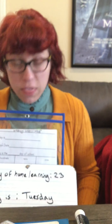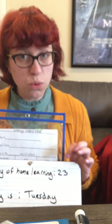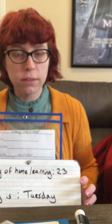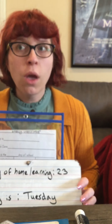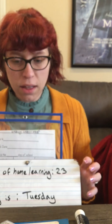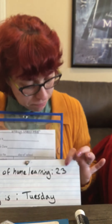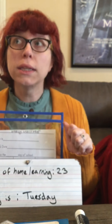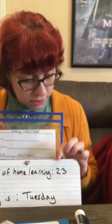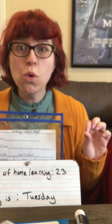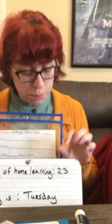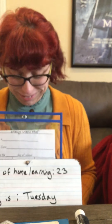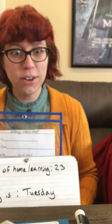The day of home learning is 23. So, what's in the ones place? Three. What's in the tens place? Two. What's in the hundreds place? Zero. We're not in the hundreds. Thank goodness.